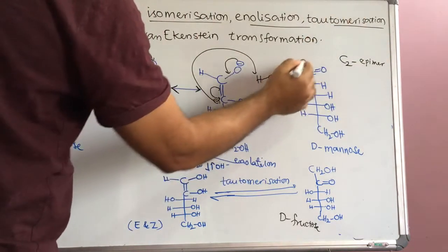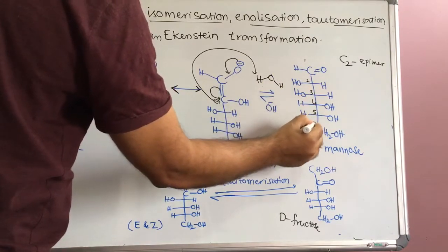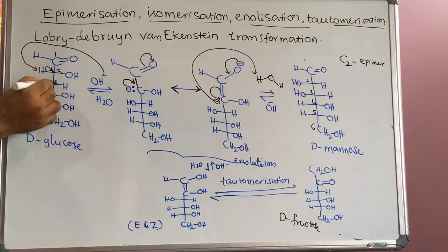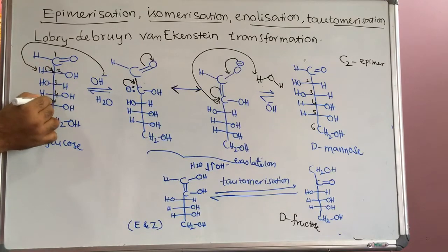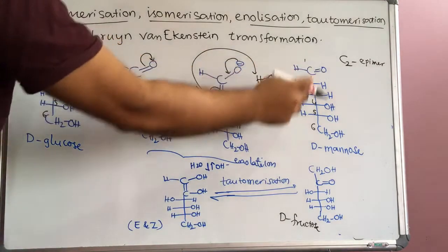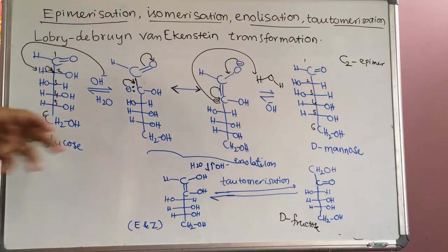This is C1, this is C2, C3, C4, C5, C6. Here also C1, C2, C3, C4, C5, C6 — the second position configuration differs. That is why D-glucose and D-mannose are called C2-epimers.